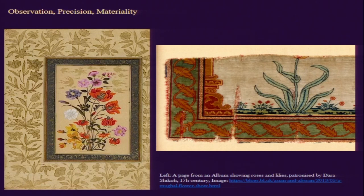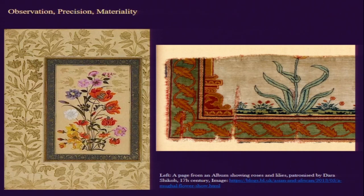In this slide, on the left side we have a page from an album showing roses and lilies, patronized by Dara Shukoh, from the 17th century. In this characteristic miniature painting, there is a central frame in which the flowers — roses and lilies — take center stage. On top we also have a suggestion of Chinese clouds, which were imbibed in Persian miniature paintings and then incorporated into Mughal and Decani miniature paintings.